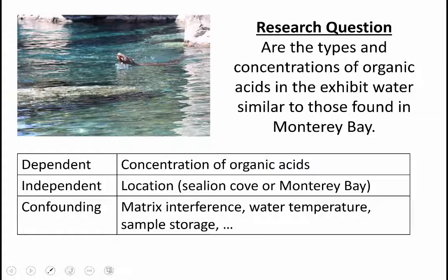The confounding variables would be things like matrix interference. That's a concept you might not be familiar with, but are there other things in the water that prevent our analysis method from seeing the organic acids? There might be something different in the water in Monterey Bay or in the exhibit that's messing with those levels. Water temperature can affect the solubility of reactions and the balance of equilibria. How the samples were stored—if the samples tested immediately after taking it from Fresno Zoo, but the ones from Monterey Bay are transported in plastic bottles for four hours before testing, is the amount of acid altered in that storage or transport process?